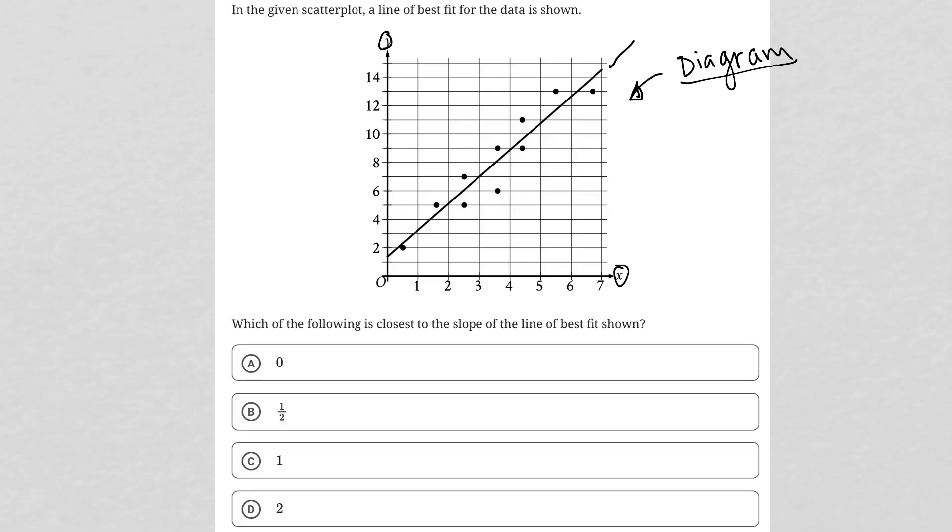We have a line of best fit and data points that are a little below or above this line. The question says: in the given scatter plot, a line of best fit for the data is shown. Which of the following is closest to the slope of the line of best fit?